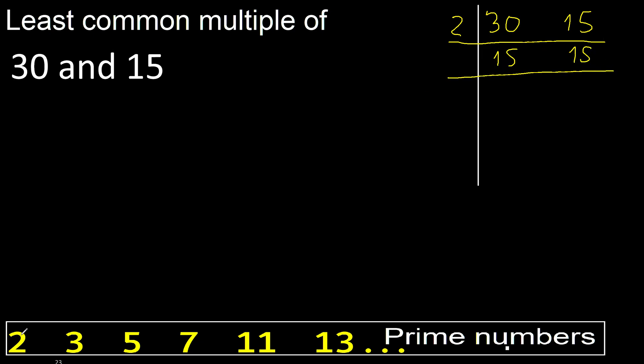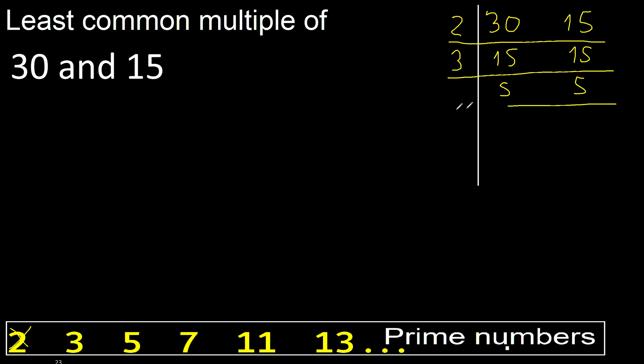Cannot be divided by 2. Can be divided by 3? Yes, divided by 3 gives 5. Divided by 3 gives 5.